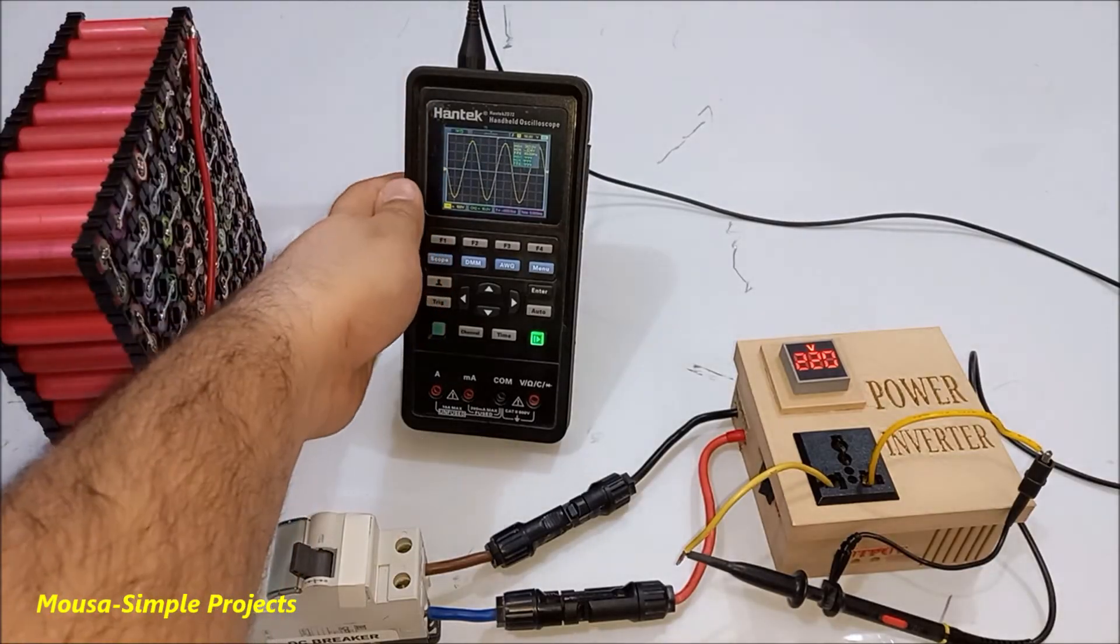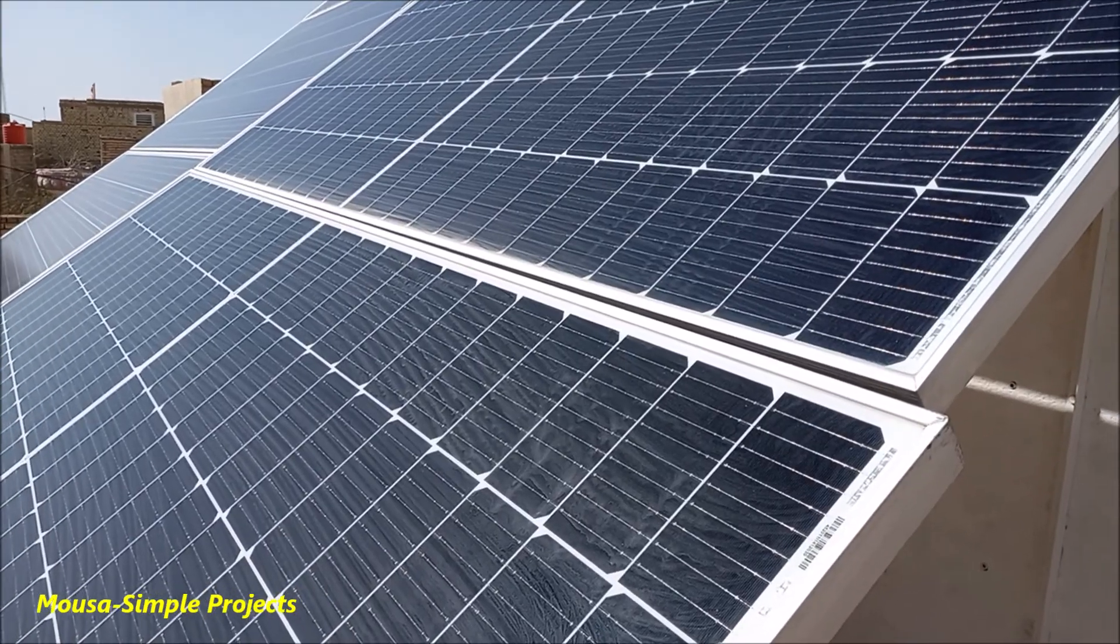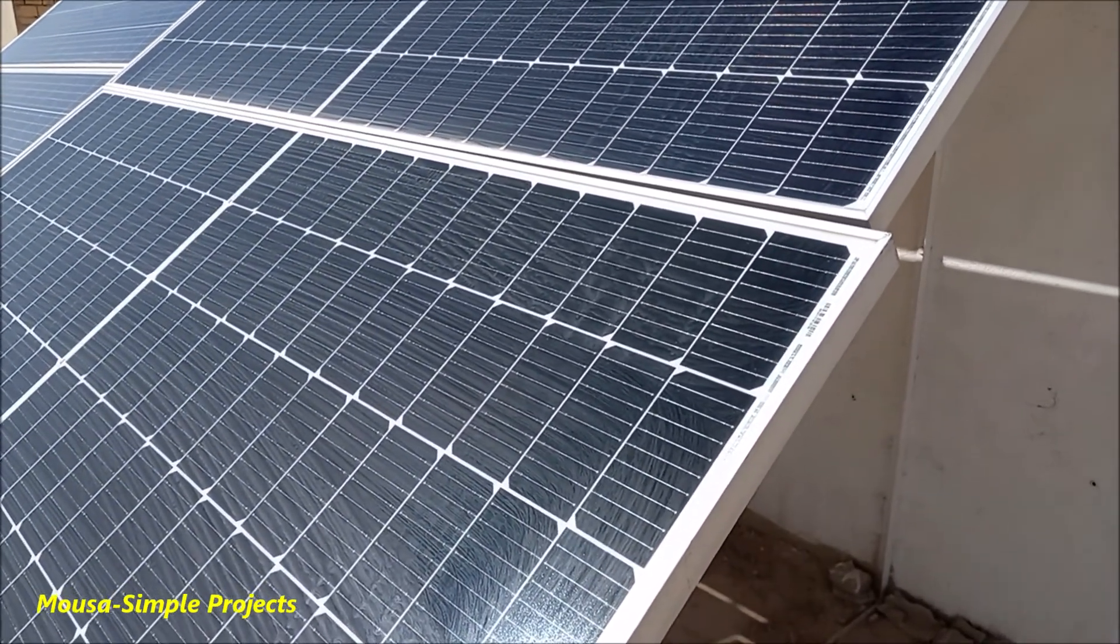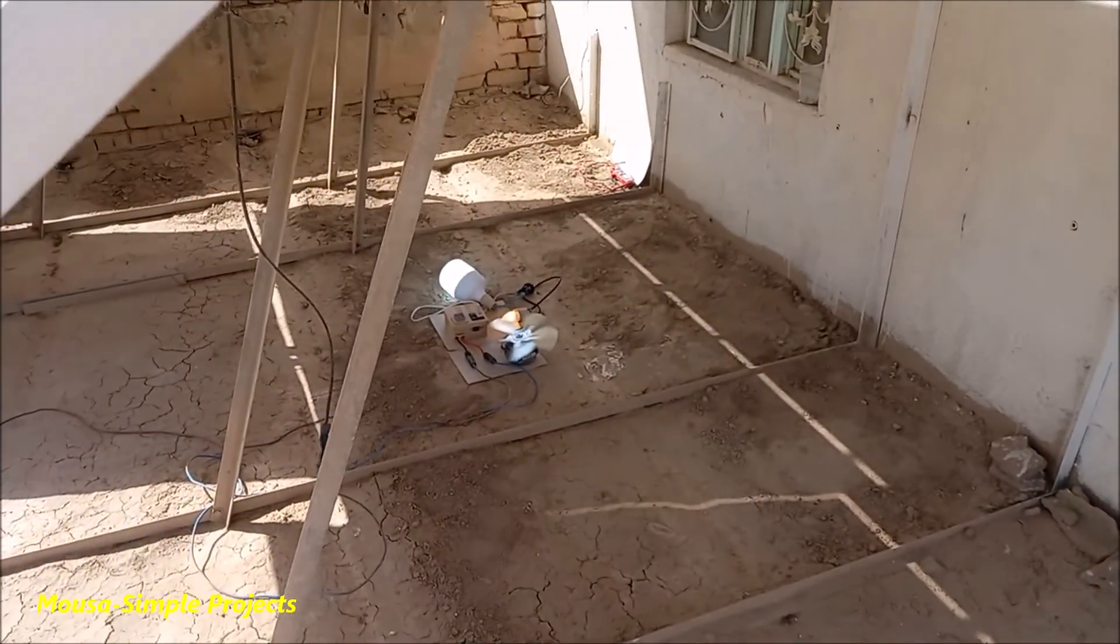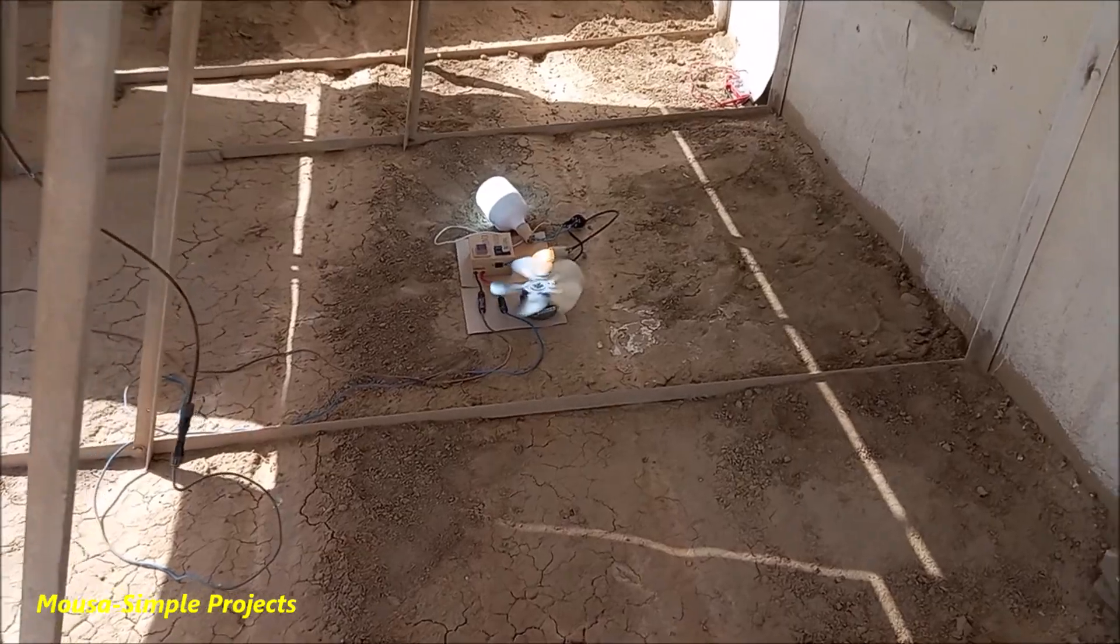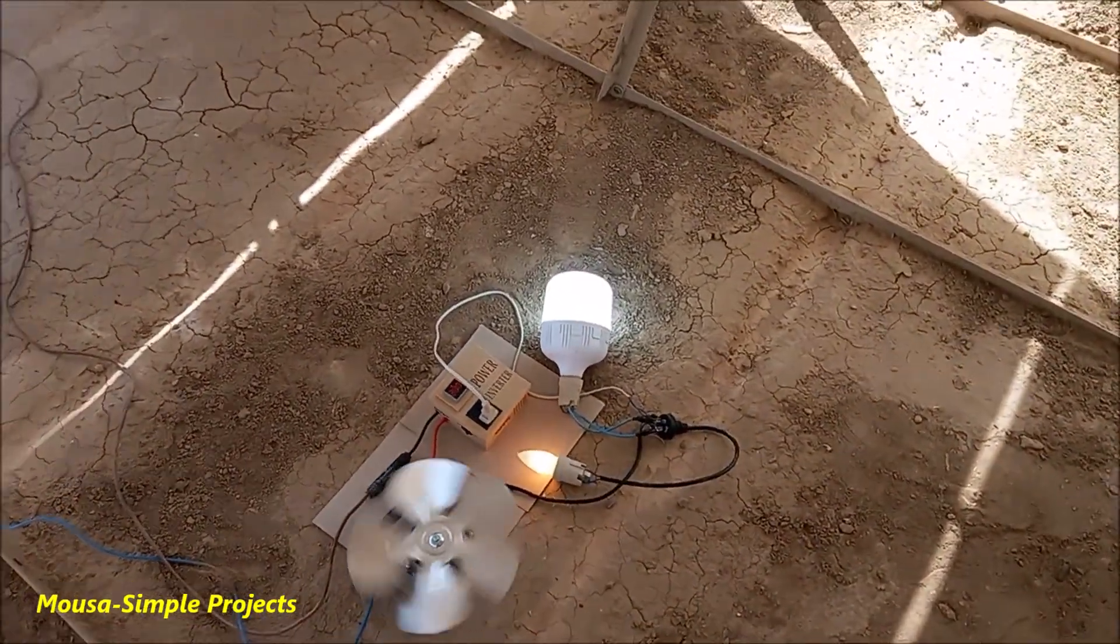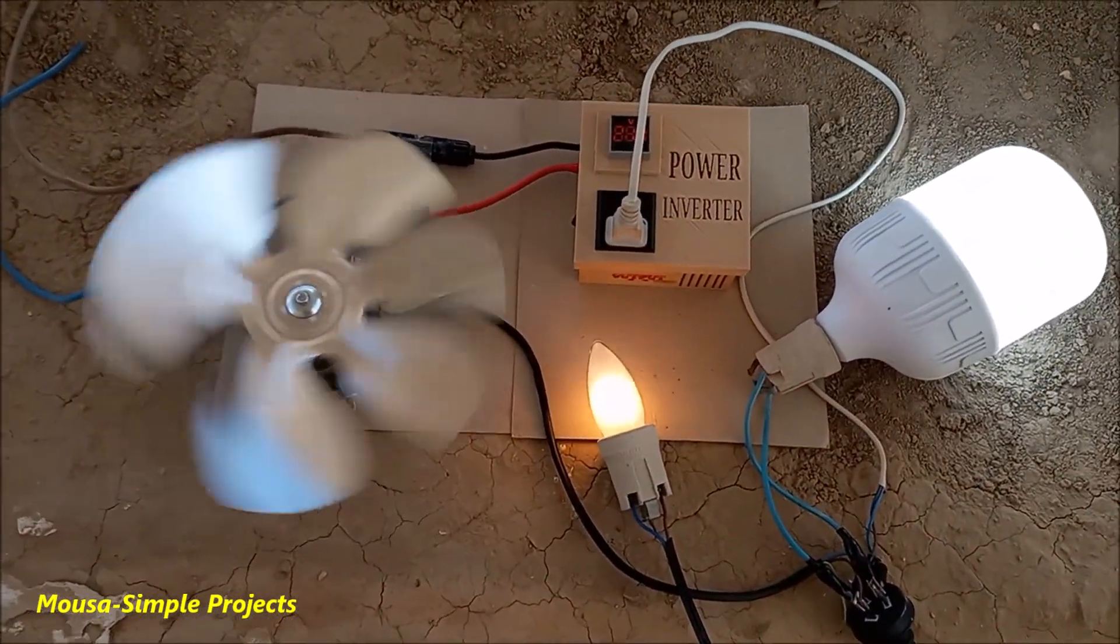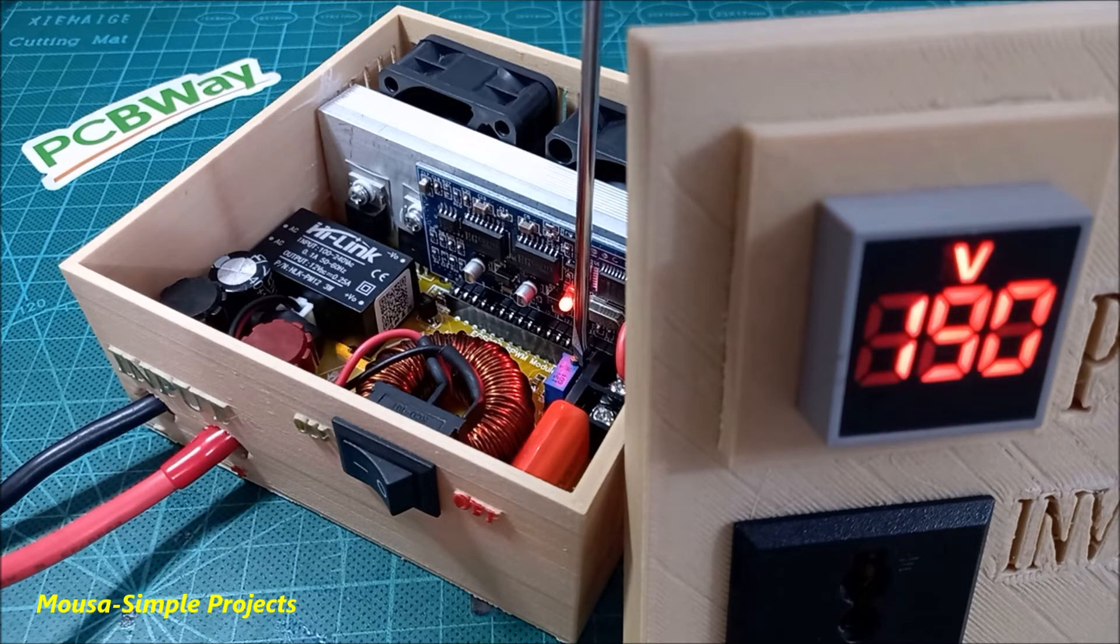As you can see here, the output waveform is pure sine wave. As I said before, you can connect this inverter to solar panels. If you need 220 volt AC, your solar panels must generate at least 311 volts. And if you need 110 volt AC, your solar panels must generate at least 155 volts DC. By using this potentiometer, you can set the output voltage you need.